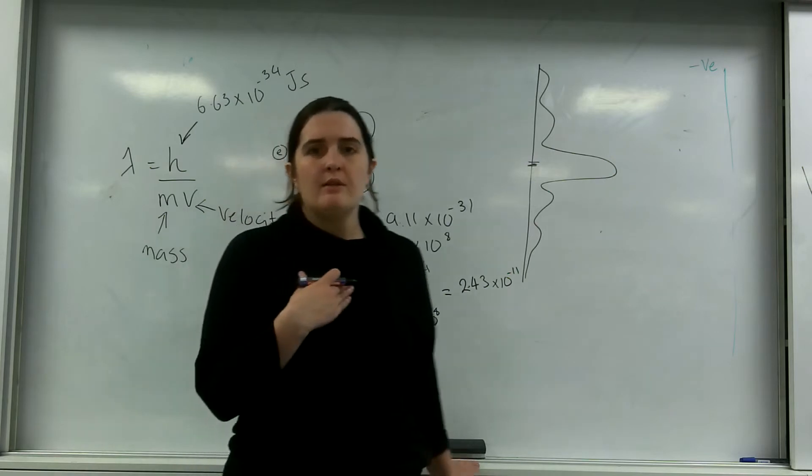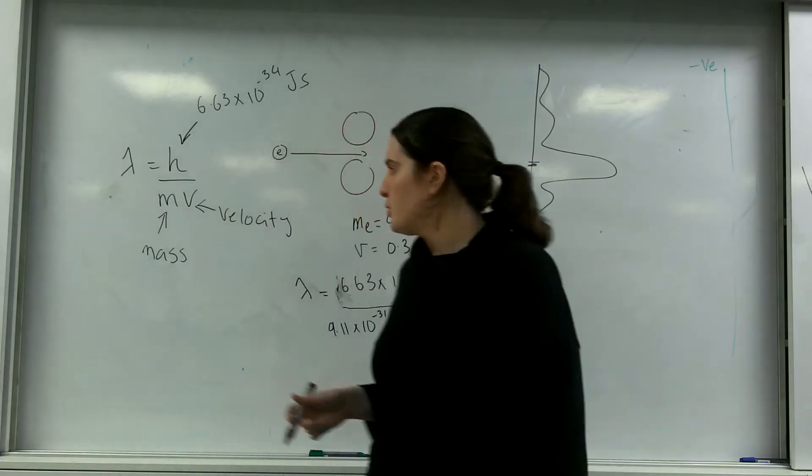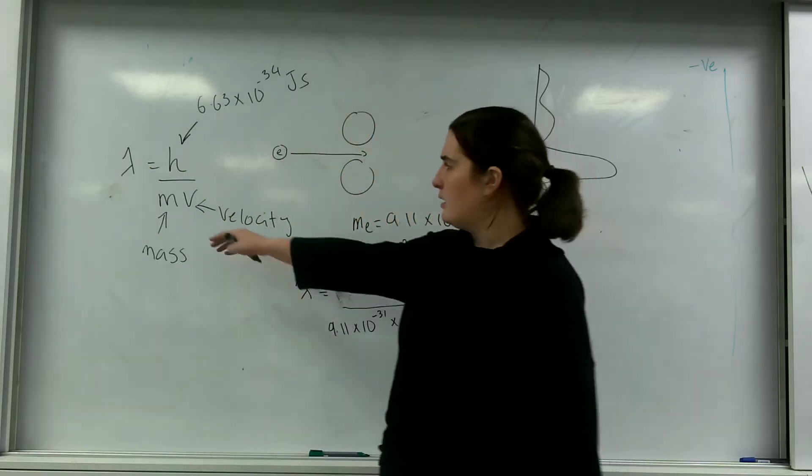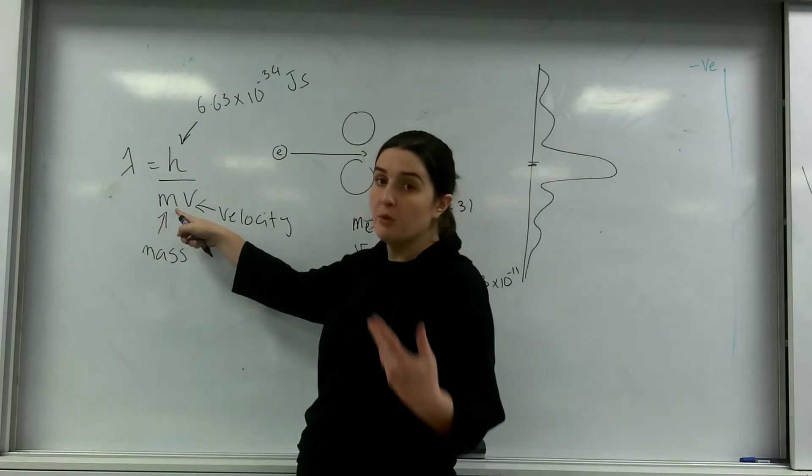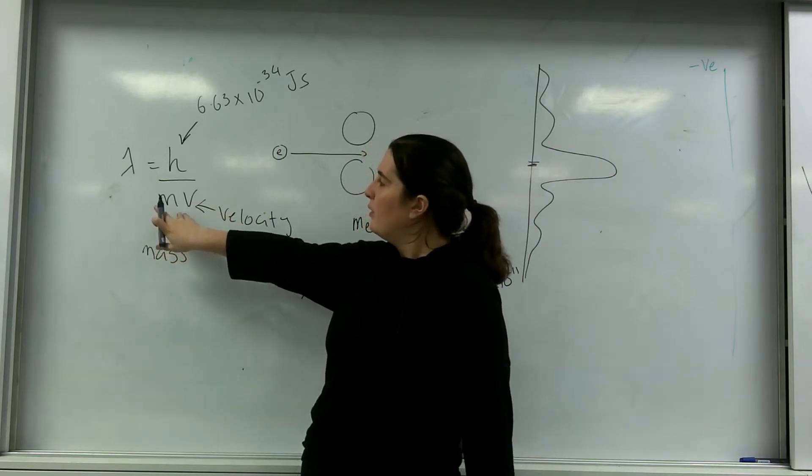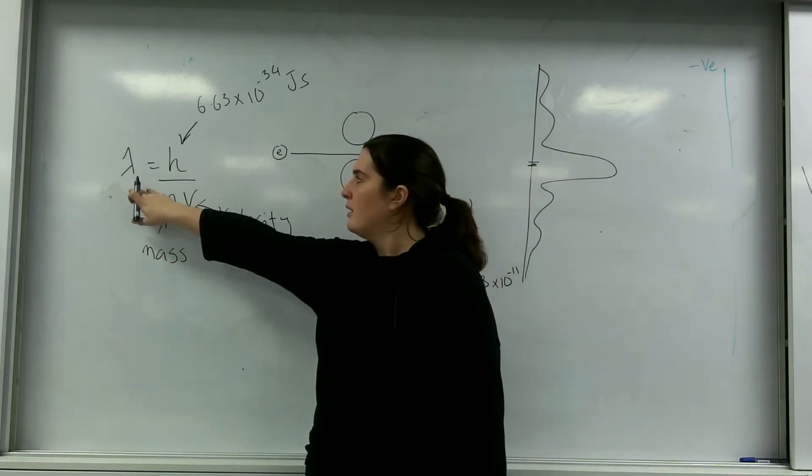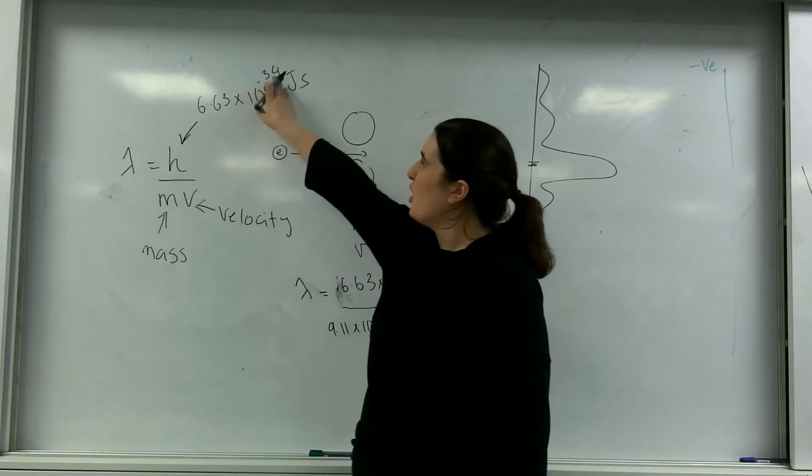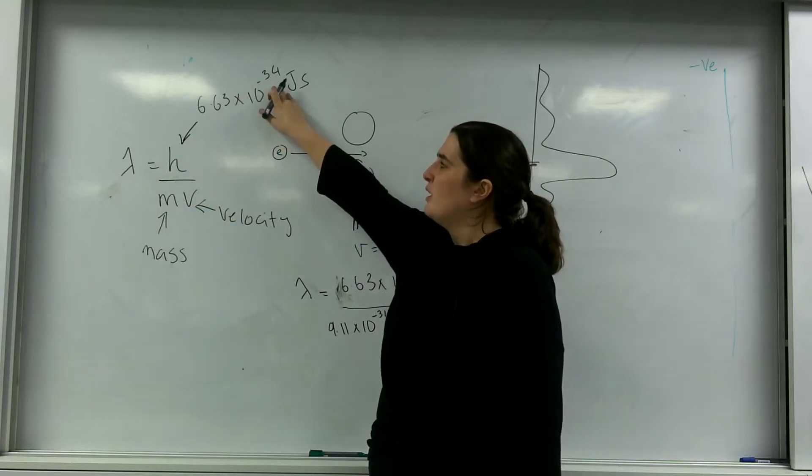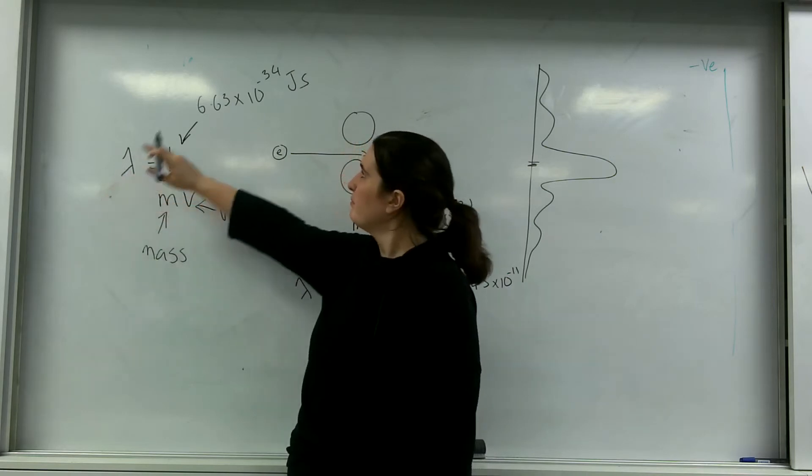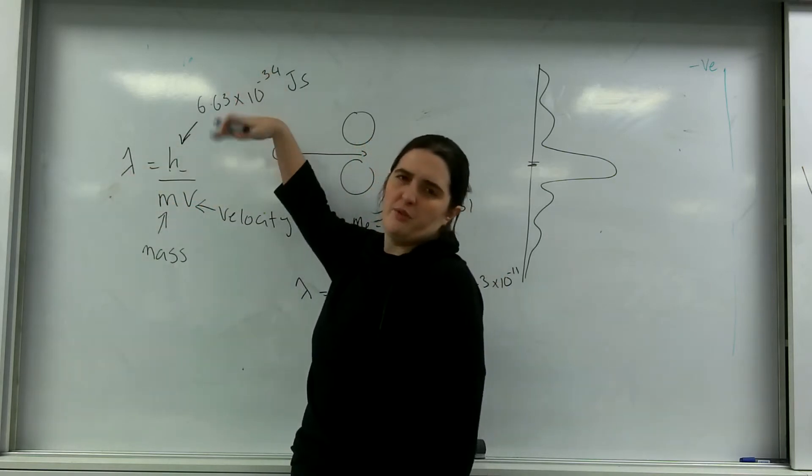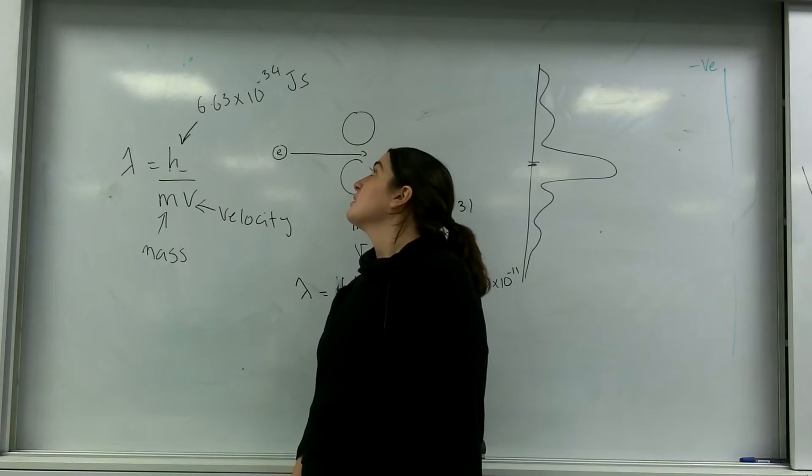If I was to put in my mass or your mass, so we're talking anywhere between 50 and 100 kilos here, or more or less, because this is so tiny, it's just going to get even tinier. So minus 34 divided by 100 is going to be minus 36.